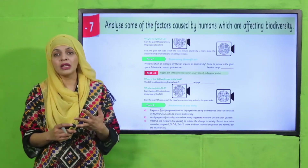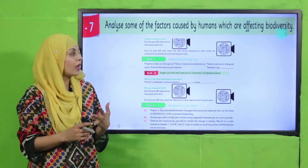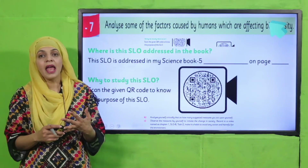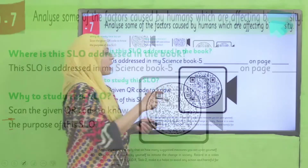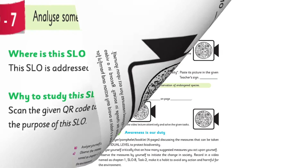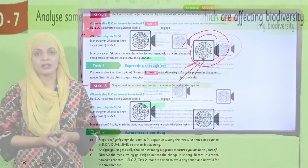Read this SLO very carefully. Then find out on which page number this SLO is given in your Science 5 book, and write down the name of the book and the page number. After that, a QR code is provided with this SLO — scan it and you will be able to complete the task given with this SLO. Complete your homework in time. Thank you so much, and Allah Hafiz.